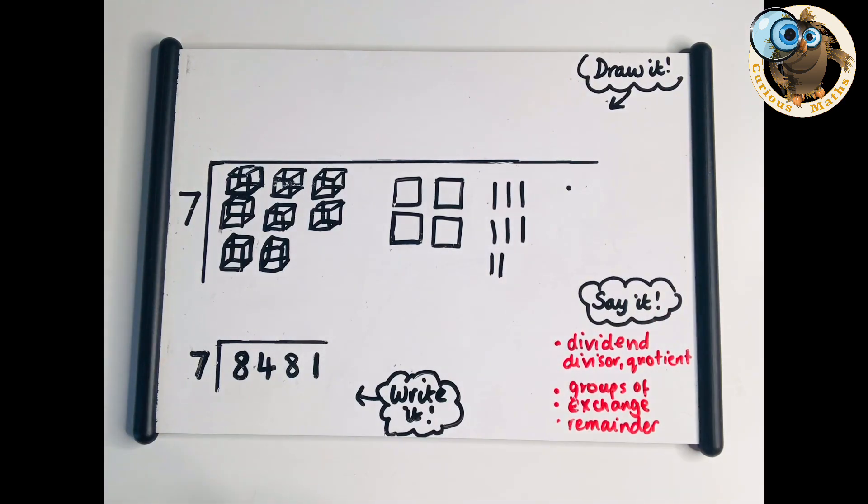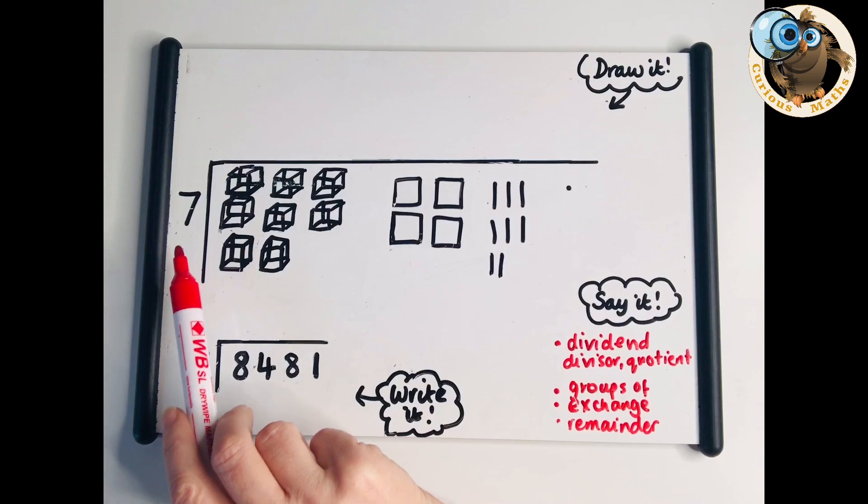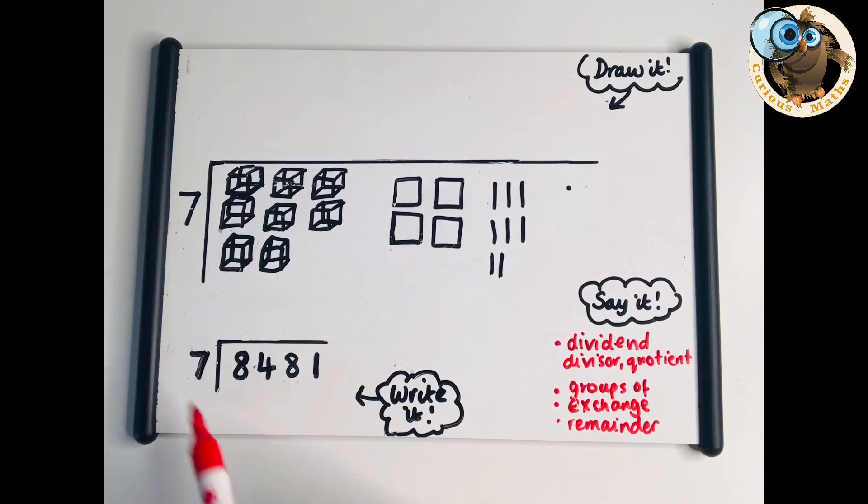For this question I've drawn it using base 10 or deans, just to mix it up. I know what you're thinking - I'm not going to ask children to draw the thousands cube. If thousands are an issue, just use place value counters for the draw. What we're going to do is use a grouping model and group into sevens. We start with thousands. I've got eight thousands.